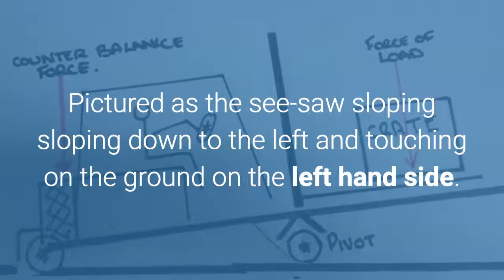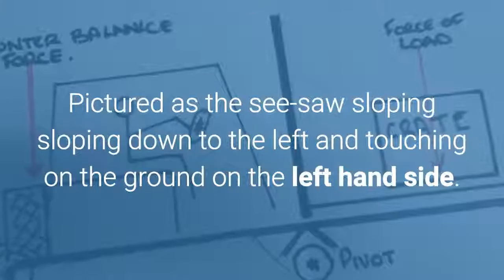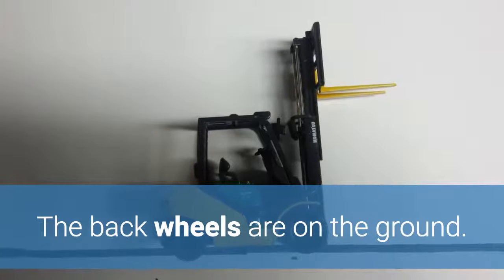Pictured as the seesaw sloping down to the left and touching on the ground on the left hand side. The back wheels are on the ground.